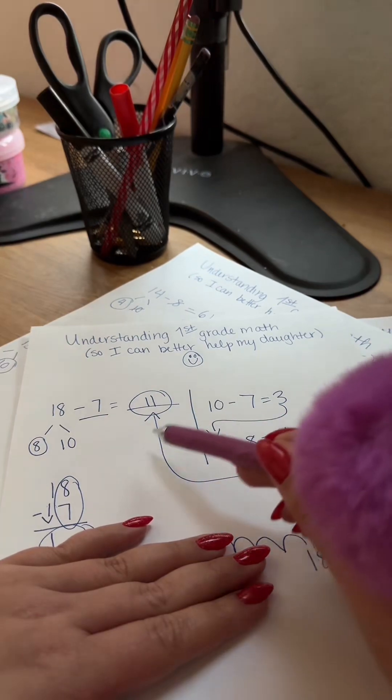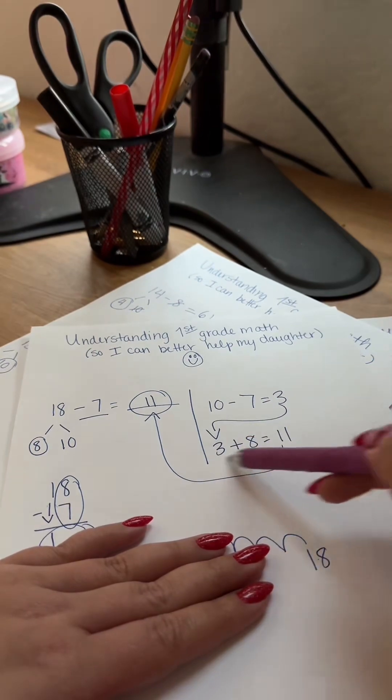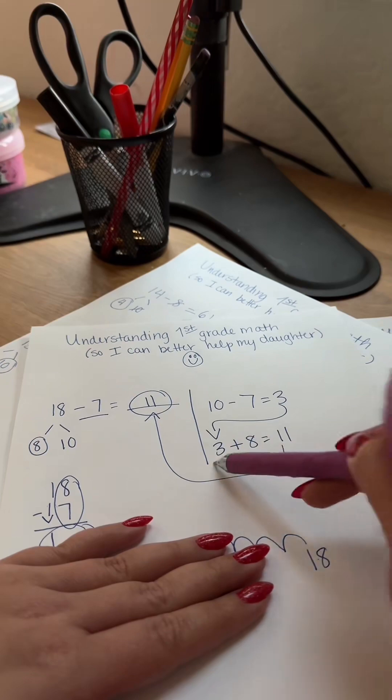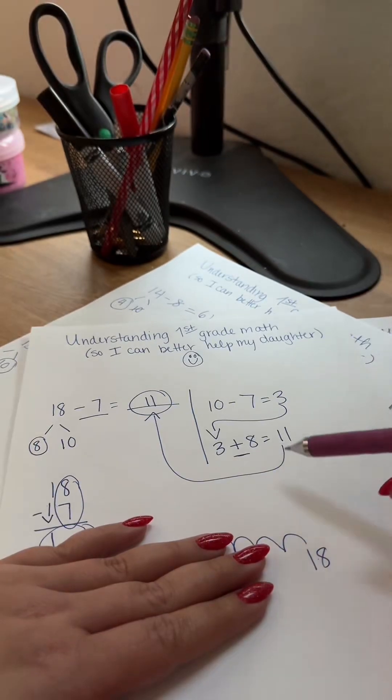I understand that you take 10 minus the original problem, so 10 minus 7 equals 3, and then you bring your 3 down here. I could not understand why we would then include addition with 8, which would be our remaining number over here, back into our original problem.